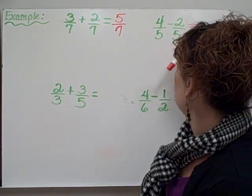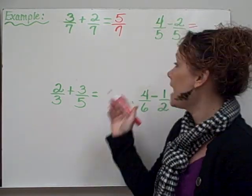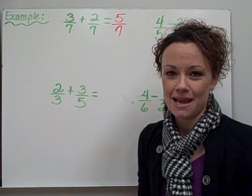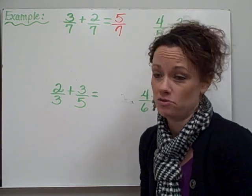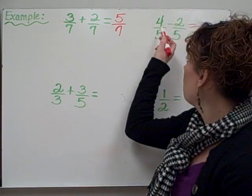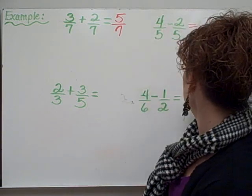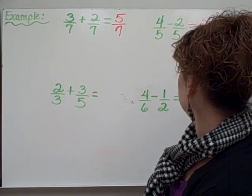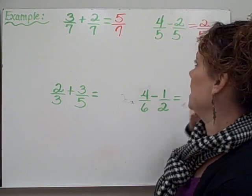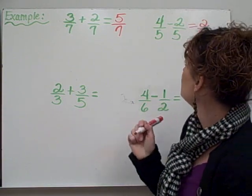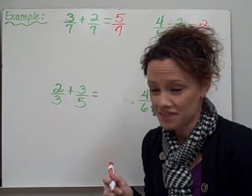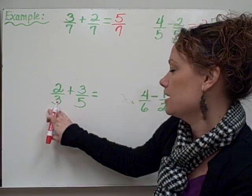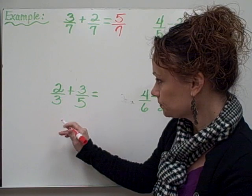Let's take a look at our subtraction example: 4 fifths minus 2 fifths. Again, my denominators are exactly the same, so I only need to focus on my numerators. 4 take away 2 equals 2, and my denominator stays the same. 4 fifths minus 2 fifths equals 2 fifths.